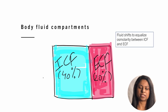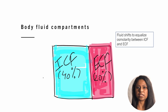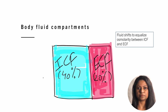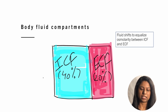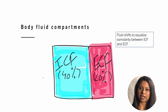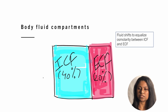60% of the total body weight is water. Of the total body water, two-thirds is the intracellular fluid or ICF, which is present within the cells, and one-third is extracellular fluid or ECF, which is present outside the cells. Fluid shifts between compartments to equalize the osmolarity between the ICF and the ECF. Water moves by osmosis from a compartment with low osmolarity into a compartment with high osmolarity. Plasma osmolarity is determined mainly by sodium, and to a small extent by glucose and, in some conditions, by blood urea nitrogen as well.